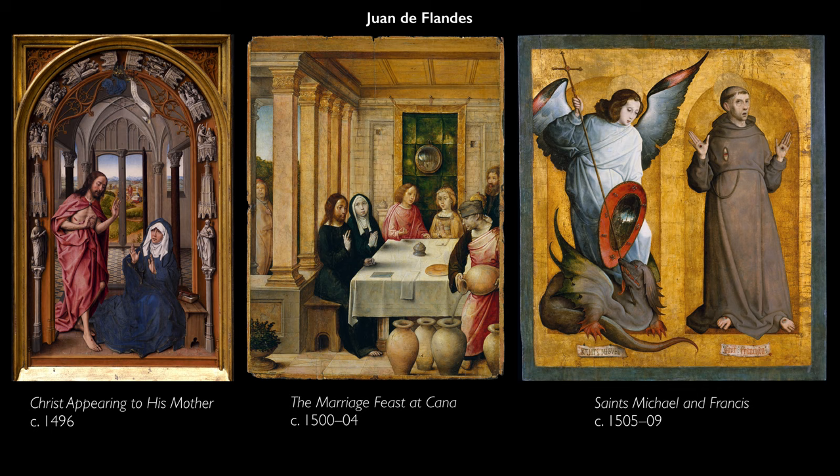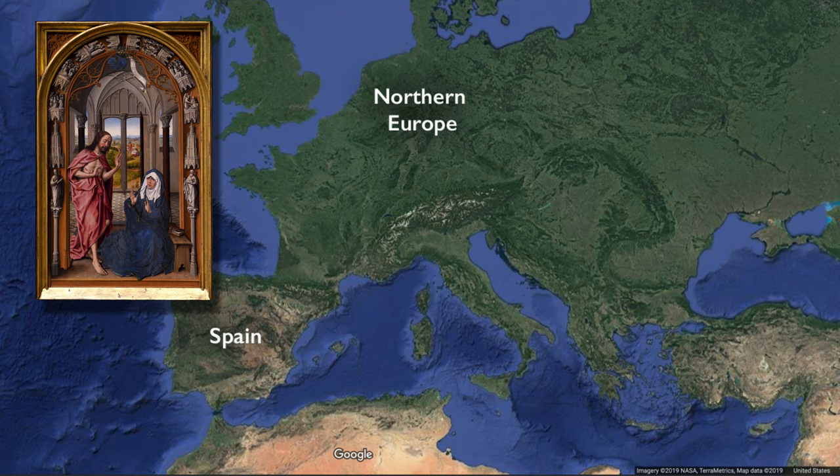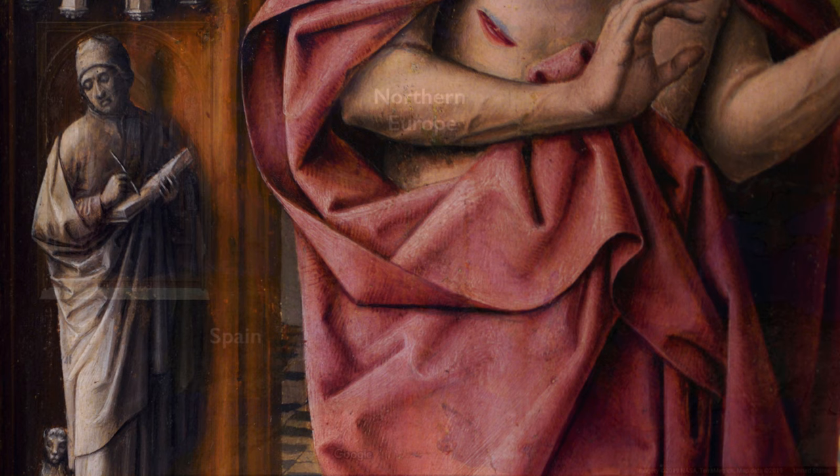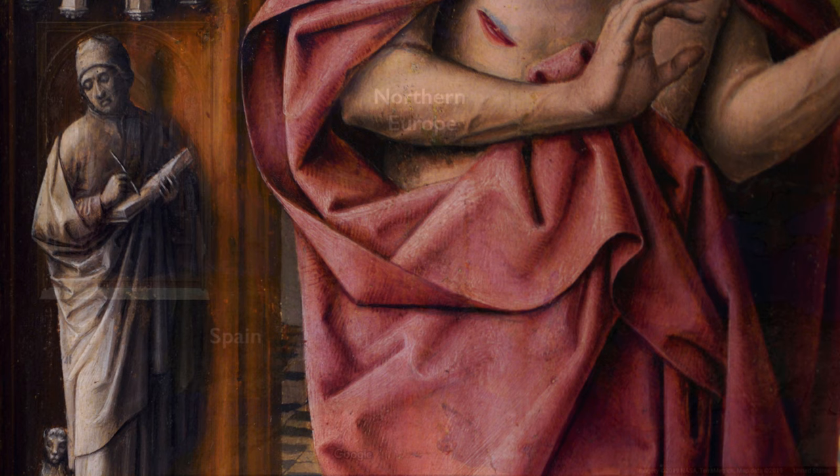Juan de Flandes even changes his own representational style throughout his career, and there are other paintings here in the Met that show his transformation over time. He's a remarkable artist — so remarkable that when he was brought to Spain by Isabel, she actually made him her court painter. Artists are always adapting their style to what their patron wants. What fun to see this painting here at the museum today.